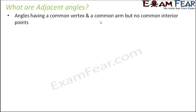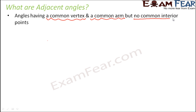Adjacent angles are those angles having a common vertex and a common arm but no common interior points. In order to decide whether two angles are sitting next to each other or not, we check that they share a common vertex and a common arm. But there is an important criteria: there should be no common interior points, so that we know they are actually sitting next to each other and not within each other.